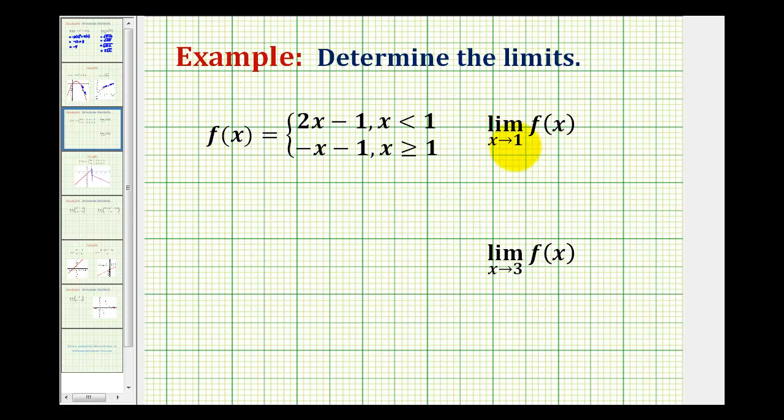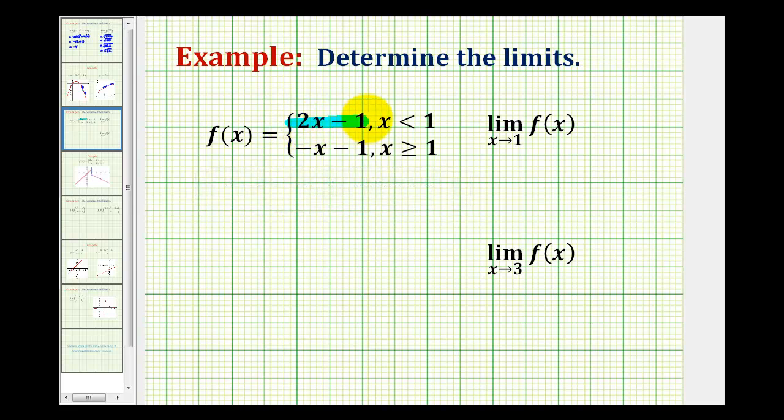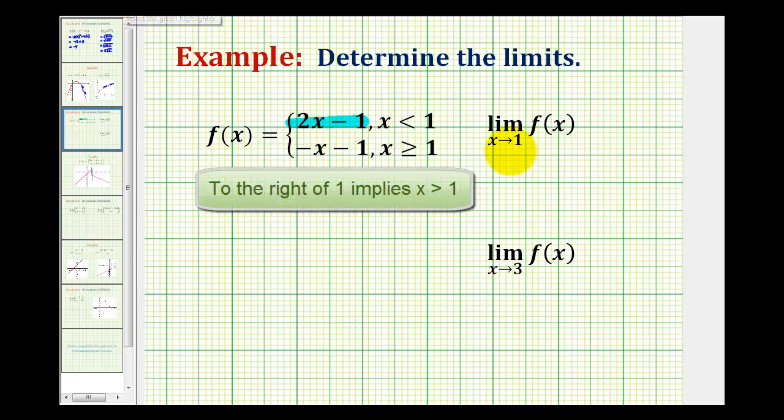We want to determine the limit as x approaches positive 1 of our function f of x. So if we're approaching from the left of 1, we're approaching on the line y equals 2x minus 1, and to the right of 1, we'd be approaching 1 on the line y equals negative x minus 1.